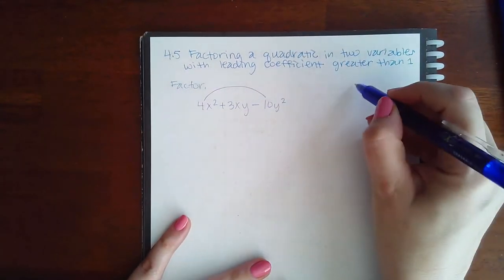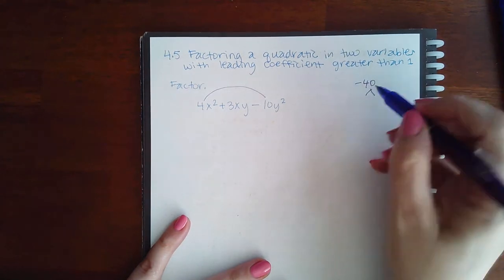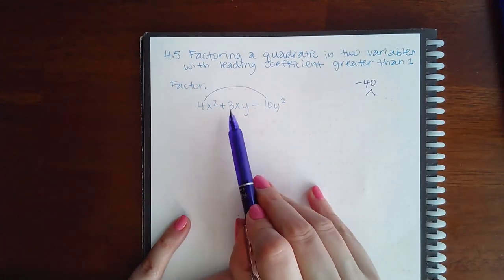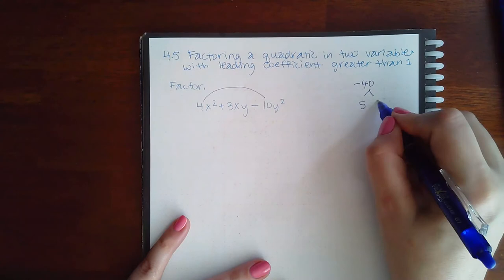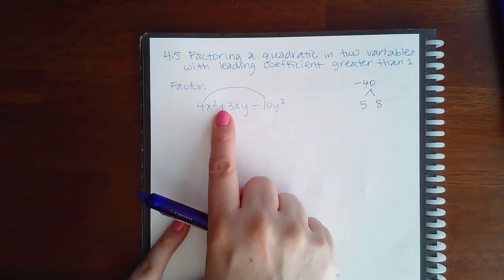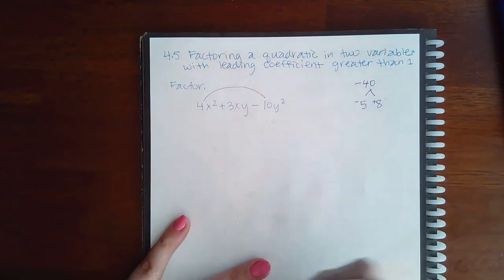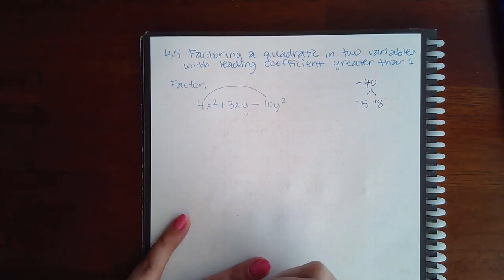So multiply these two, you get negative 40. The factors that subtract to give me three are again five and eight. And since the bigger one has to be positive to get me a positive three, we're using these two numbers here.